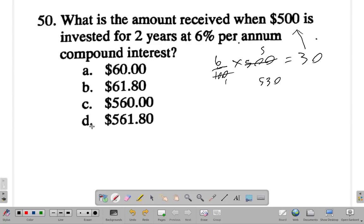So without doing the next part, you know it must be $561.80. So again, if it was simple interest, you'd get $30 in the first year and $30 in the second year to add to $60.